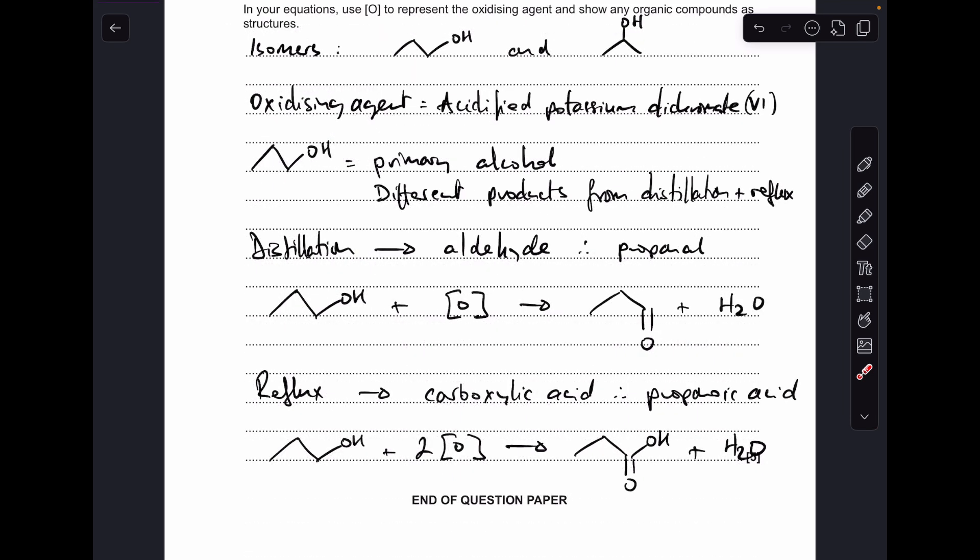And for the case of reflux we're going to make a carboxylic acid so therefore propane-1-ol will make propanoic acid and there's the equation there. Two oxidations are taking place so we need two moles of oxidizing agent but we only make one mole of H2O and that's made when the aldehyde's formed.